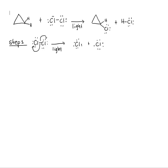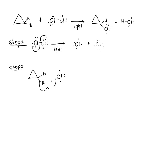Step two: one of the two chlorine radicals produced in step one reacts with the cyclopropane. Half of the carbon-hydrogen bond, representing one electron, pairs with the lone electron on the Cl, and the other half of that C-H bond goes to the carbon as a lone electron.